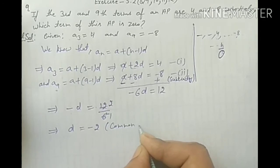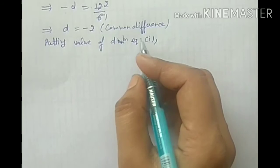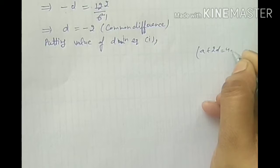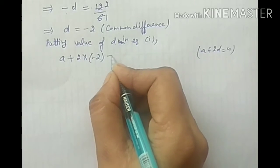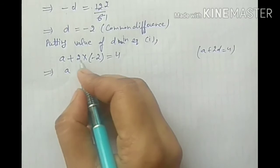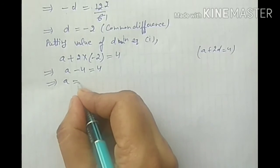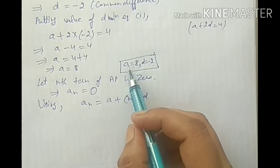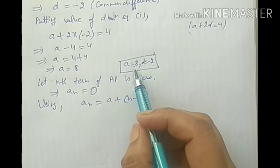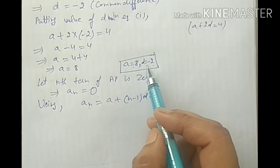Putting the value of D in equation 1: A plus 2D equals 4. So A plus 2 into minus 2 equals 4, giving A minus 4 equals 4. Transposing minus 4 to the right hand side it becomes plus 4, which gives A equals 8. हमने 3rd term और 9th term की value का use करते हुए formula से A और D की value find out कर ली।